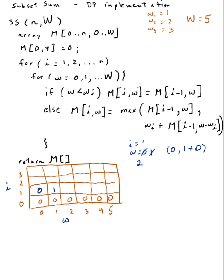w goes to 2. Is 2 less than 1? No. So I compute the max of m[0][2] which is 0, or w1 which is 1 plus m[0][2 minus 1] which is m[0][1]. m[0][2] is 0 and m[0][1] is 0, so I have 1 plus 0, giving 1. Max between 0 and 1 gives me 1 for m[1][2].